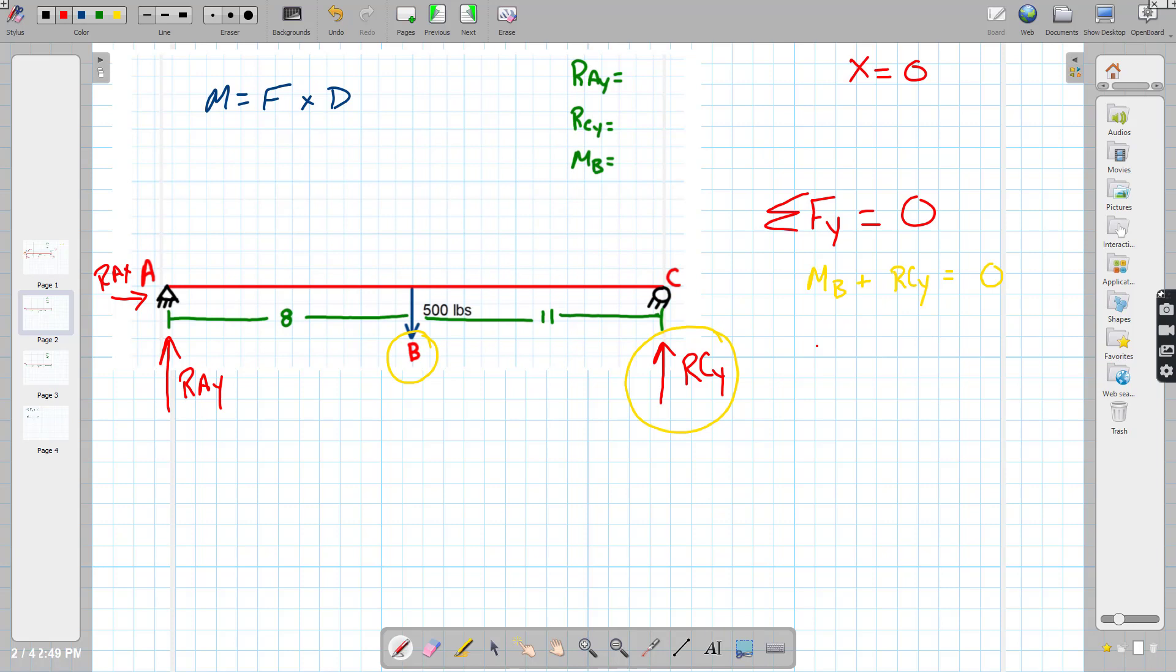All right, so here's how we've got to write this thing. Moment B, I just like to put distance first. So I'll say eight times negative 500. I know it's negative because that arrow is pointing down, right? And on the Y axis, remember that whole sense thing? That means it's negative. So we've got a negative 500. So that is moment B.